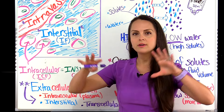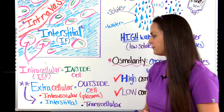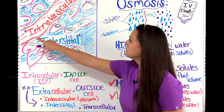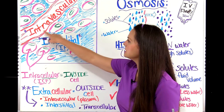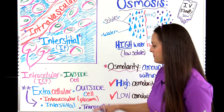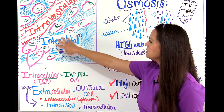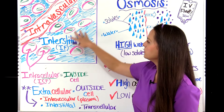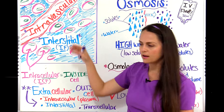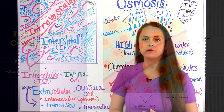The extracellular compartment is made up of the intravascular fluid, also referred to as the plasma. Then we have the interstitial fluid, which is just surrounding our cells, and then we have the transcellular fluid.